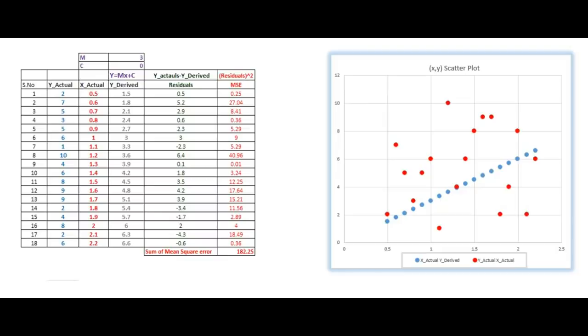Before understanding gradient descent, let's discuss a very simple problem where we are trying to fit a line on top of some points given in the table. We have y actual and x actual. These red points showing in the scatter plots are the y actual and x actual. And this blue line shows y derived and x actual. The equation of line is y equals mx plus c.